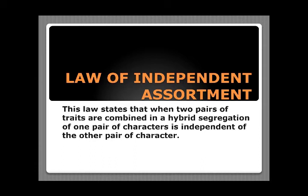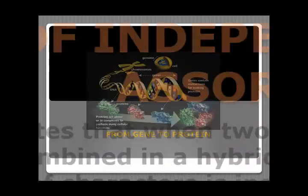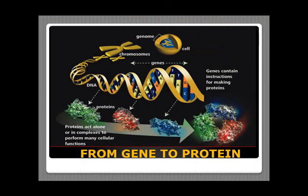On the basis of the dihybrid cross, Mendel gave his third law — the law of independent assortment. This law states that when two pairs of traits are combined in a hybrid, the segregation of one pair of characters is independent of the other pair. These three laws — law of dominance, law of segregation, and law of independent assortment — are collectively known as the laws of inheritance given by Gregor Mendel.